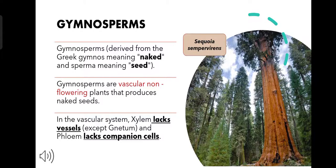Gymnosperms. Gymnosperms is derived from a Greek word gymnos meaning naked and sperma meaning seed. The gymnosperms are thus vascular non-flowering plants that produce naked seeds, i.e. their ovules are not enclosed within an ovary.